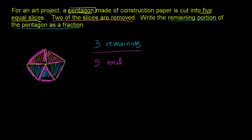So you could say that 3/5 of the pentagon remain. Or you could say 2/5 were removed. That's two of the five slices were removed. And then three are remaining, or 3/5 of the pentagon remain.